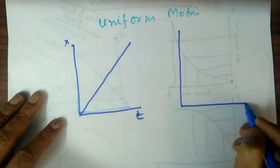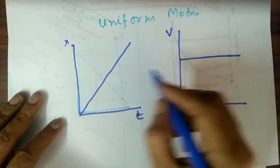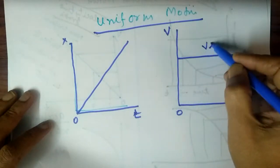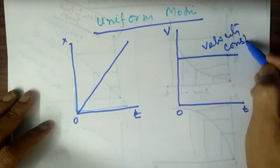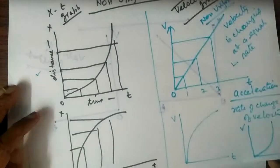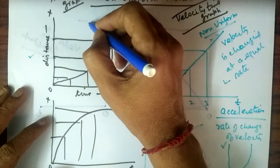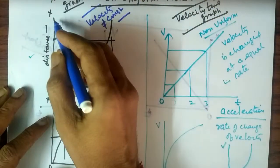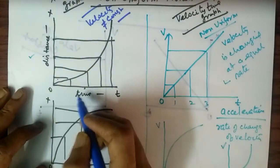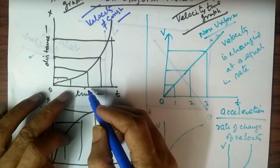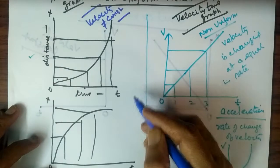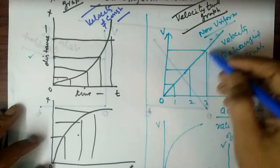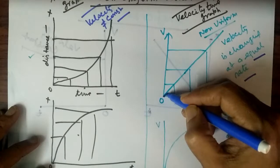In case of uniform motion, the XT graph is a straight line and the VT graph is a horizontal line — velocity is constant. In non-uniform motion, velocity is not constant. The XT graph shows that in a regular time interval the distances covered are different. When velocity changes at an equal rate, the VT graph is a straight inclined line.